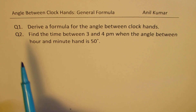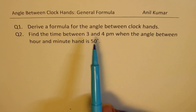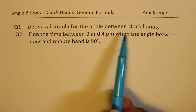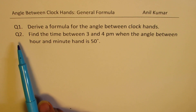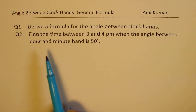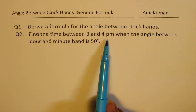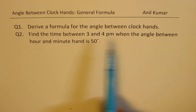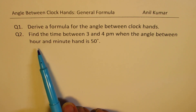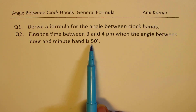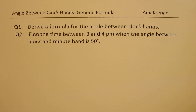Question number one is: derive a formula for the angle between clock hands. And question number two is: find the time between 3 and 4 p.m. when the angle between the hour and minute hand is 50 degrees. I'd like you to pause the video, answer the question, and then look into my suggestions.